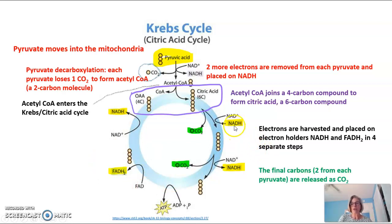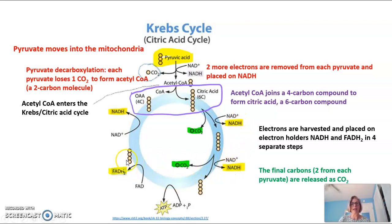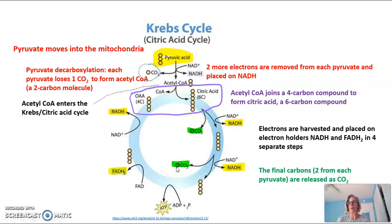The final two carbons — two from each pyruvate — are released as CO2 in the Krebs cycle. By this point in the Krebs cycle, there are actually no carbons left from the original glucose. What we do have from the original glucose is all the electrons being held onto by the electron holders. The energy in glucose was in the electrons, so even though all of the carbons are gone, that's not what we wanted — we wanted those electrons, and we have those electrons.